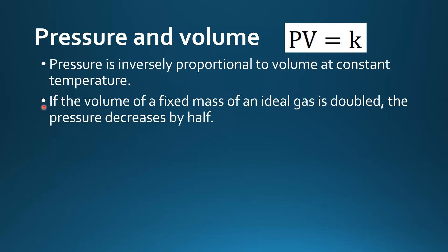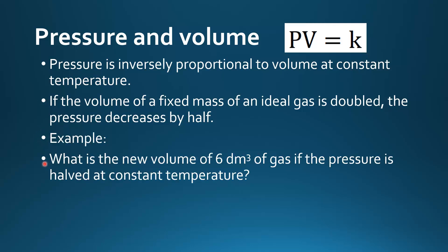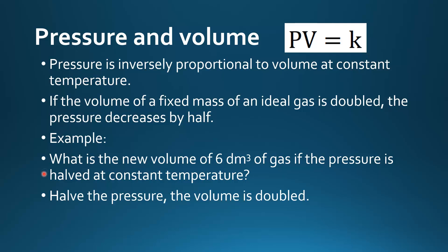If the volume of a fixed mass of an ideal gas is doubled, the pressure decreases by half. For example, what is the new volume of 6 decimetres cubed of gas if the pressure is halved at constant temperature? If you halve the pressure the volume is doubled, so the new volume equals 12 decimetres cubed.